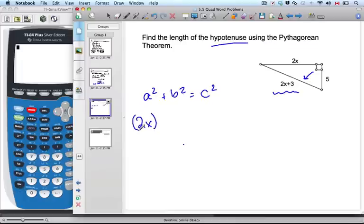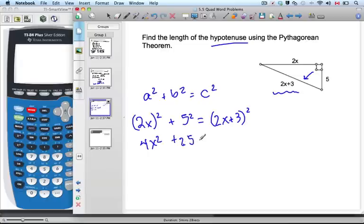Plus b, just 5 squared. Again on the c, it's very important to keep those parentheses in there. Write out the parentheses; people tend to forget to square everything. So 2x squared is going to be 4x² + 25.